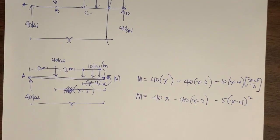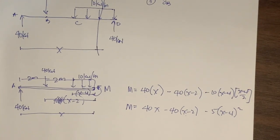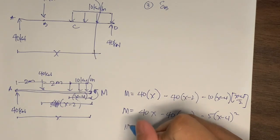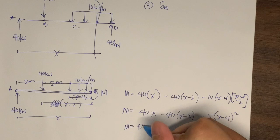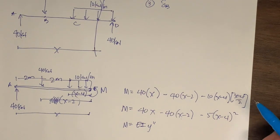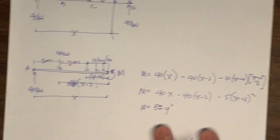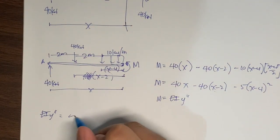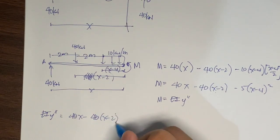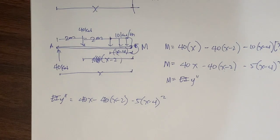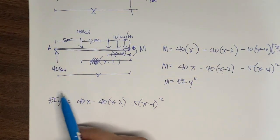Based on our last discussion on the derivation and principles of the double integration method, the moment equation equals EI times y double prime, where EI is the flexural rigidity. So we can write: EI y'' = 40x minus 40(x minus 2) minus 5(x minus 4) squared. We now have the second derivative of the deflection function y with respect to x.